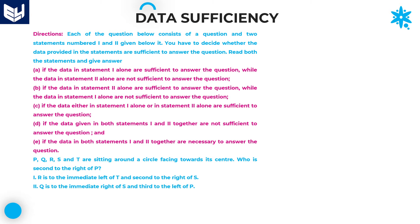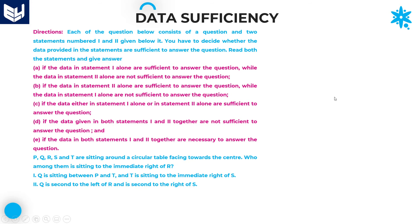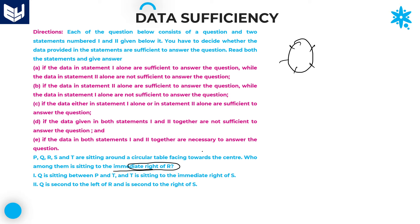Next question. P, Q, R, S, T — here also five members are there. All five members are sitting around a circle and all of them are facing the center. The question is: who among them is sitting immediate right of R?